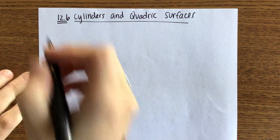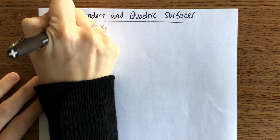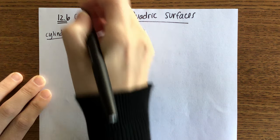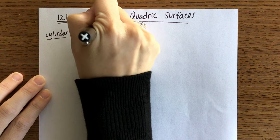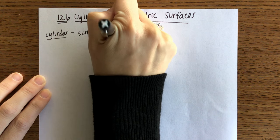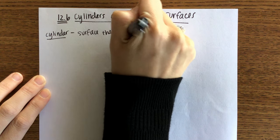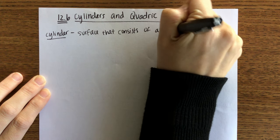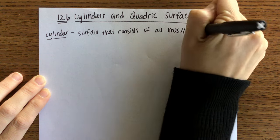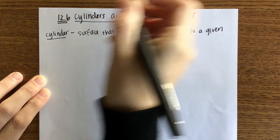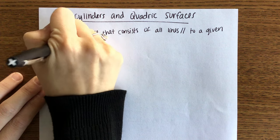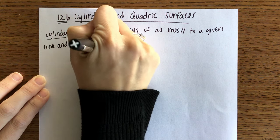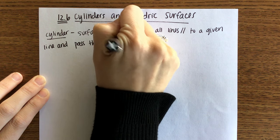We're going to start with the cylinder. Cylinder is going to be a little bit different than what you guys have known before. Definition of a cylinder: a cylinder is a surface that consists of all lines parallel to a given line and pass through a given plane curve.